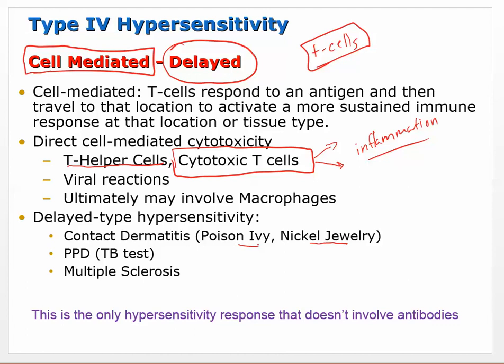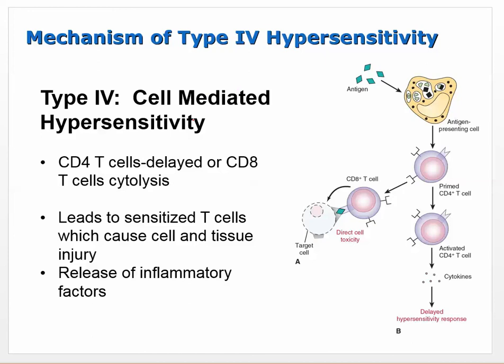Multiple sclerosis is a disease of the myelin sheath - T cells are attacking myelin protein, killing those myelin sheaths and ultimately the neuron. This is the only hypersensitivity response that does not involve antibodies.